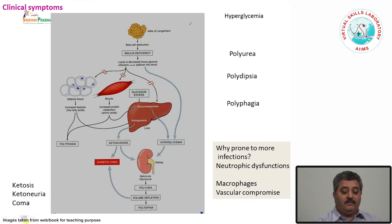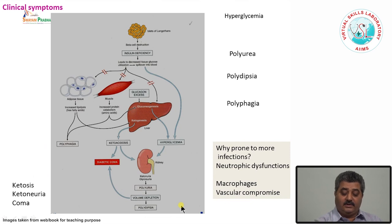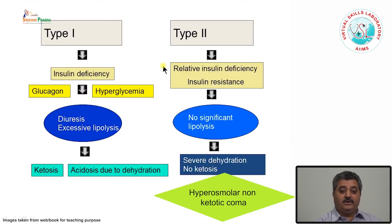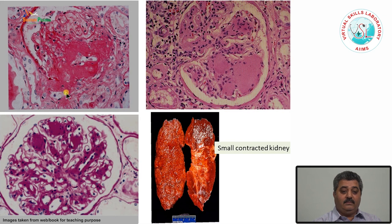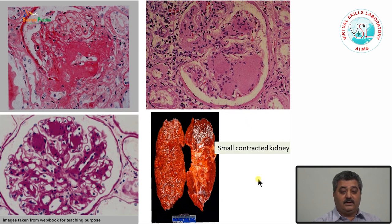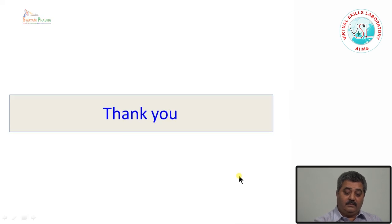Ketosis, ketonuria, and coma are more common in type 1 diabetes, whereas in type 2 diabetes it is the hyperosmotic diuresis which sometimes leads to coma. In summary, this picture shows the mechanism of type 1 and type 2 diabetes, and the complications of diabetes, which are the most important causes of mortality and morbidity in diabetic patients. Thank you.